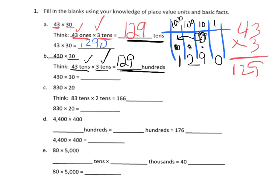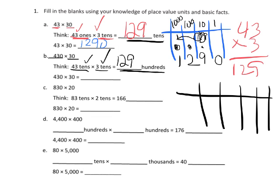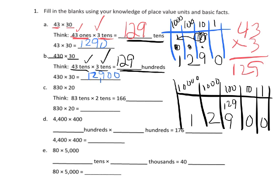And so 129 hundreds, if we were going to look at a place value chart—ones, tens, hundreds, thousands, ten-thousands—with nothing in the tens or the ones place. So 129 hundreds is really going to be 1, 2, 9, 0, 0. So 12,900.